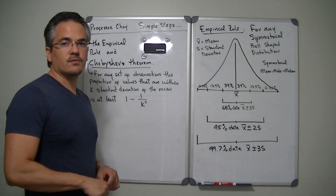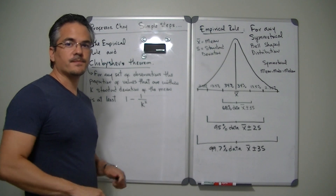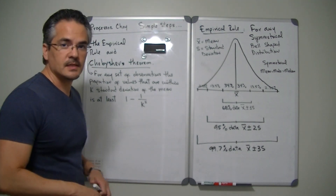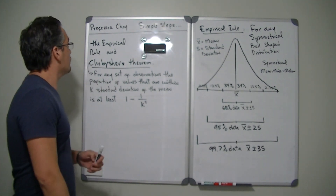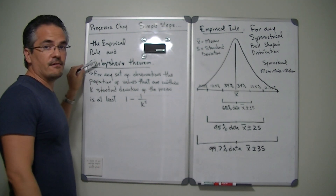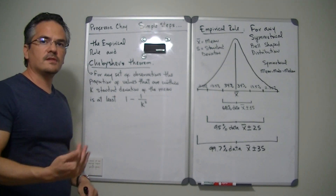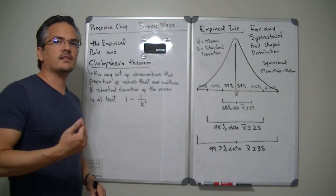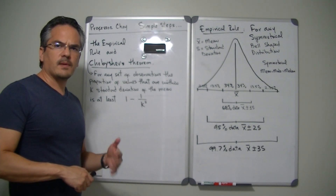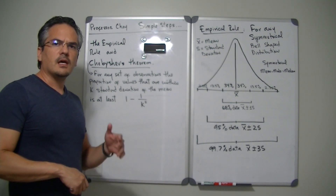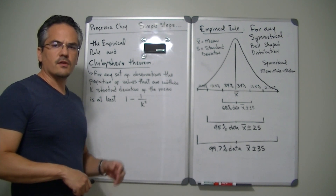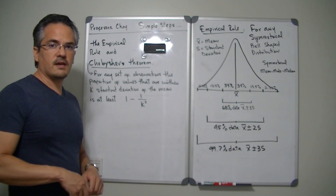Hello and welcome to another conversation with Professor Choi. Today we're continuing our education on statistics. I wanted to have a conversation about something called the empirical rule and Chebyshev theorem. This is one of those videos you need to watch after you have already watched my other video where I explain how to calculate central tendency and spread of data. So if you haven't watched that one, you should watch that video first.